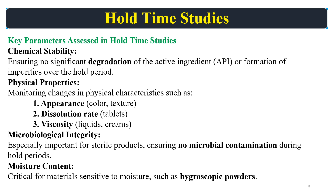Coming to the key parameters assessed in hold time studies: chemical stability, physical properties, microbiological integrity and microbiological load or microbial contamination, and moisture content are studied. You can also study those parameters which are linked to the particular product and the processing steps. Chemical stability ensures monitoring of degradation. Physical properties include appearance, dissolution rate, and viscosity. Microbial integrity covers microbial contamination, and moisture content covers hygroscopic powders and LOD. Many parameters can be studied in hold time studies.